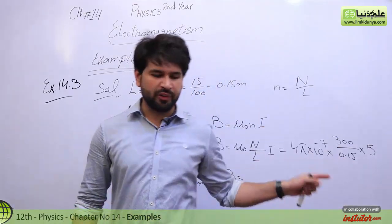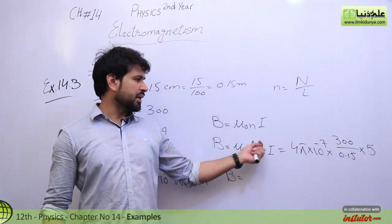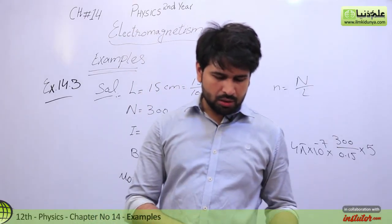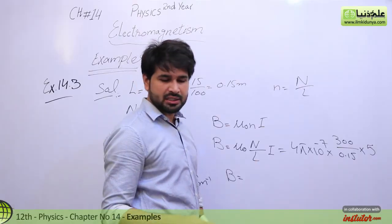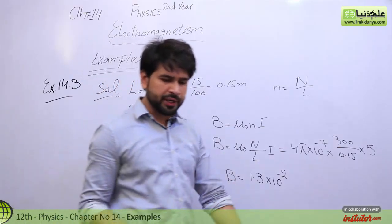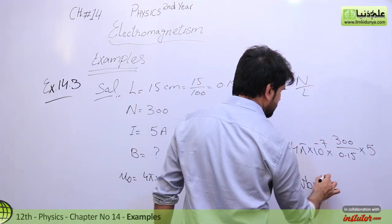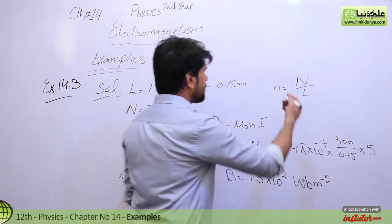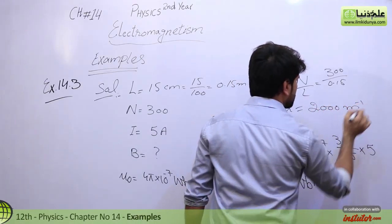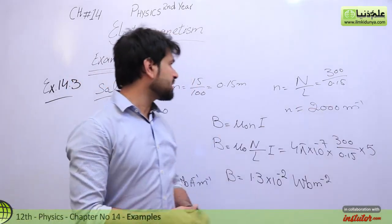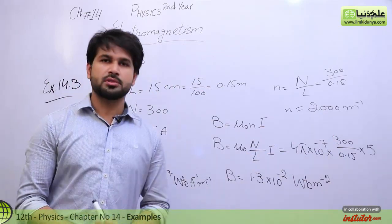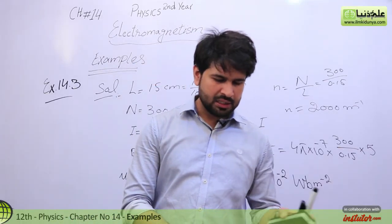Computing the answer: 300 divided by 0.15 equals 2000 per meter — that is the number of turns per unit length. The final answer is 1.3 times 10 raised to the power minus 2 Weber per meter square. You can verify this in your book. Let's move to the next numerical example.